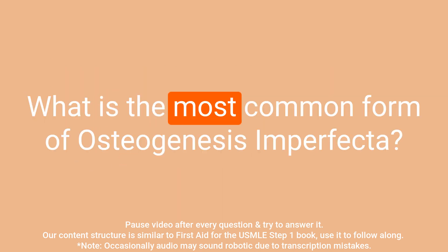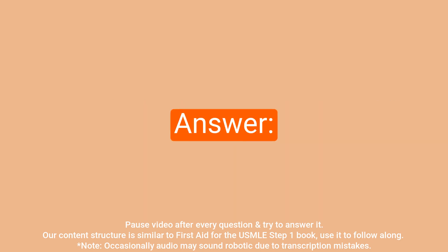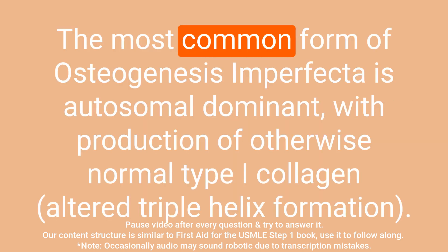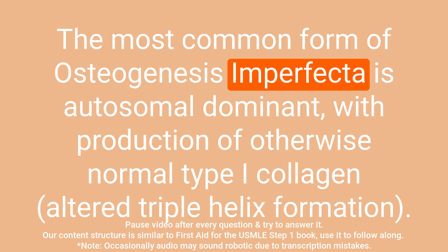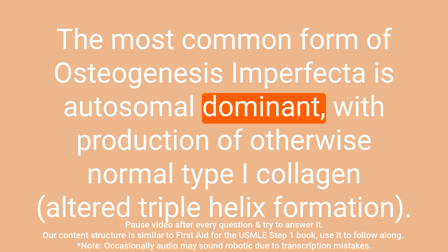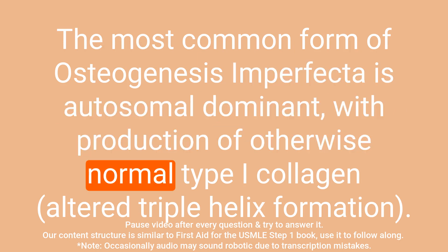Question: What is the most common form of osteogenesis imperfecta? Answer: The most common form is autosomal dominant with production of otherwise normal type I collagen.